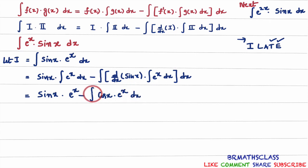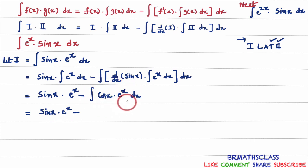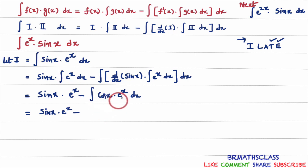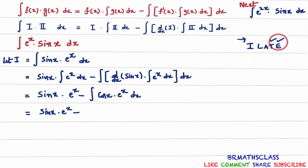Simplifying further, we get: sin x into e power x, minus the integral of cos x into e power x dx. You can observe that this is again the integral of a product of two functions, which means we are going to use the integration by parts formula a second time. Before applying it again, we check the ILATE rule: cos x is a trigonometric function, e power x is an exponential function — trigonometric is first, exponential is second. This is the correct order, so we can apply integration by parts again.